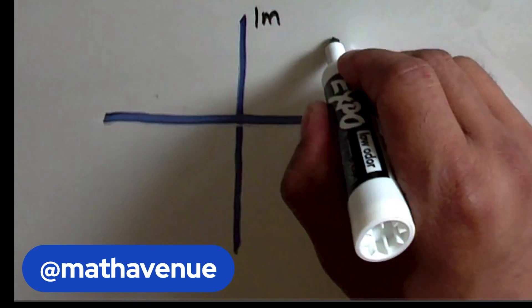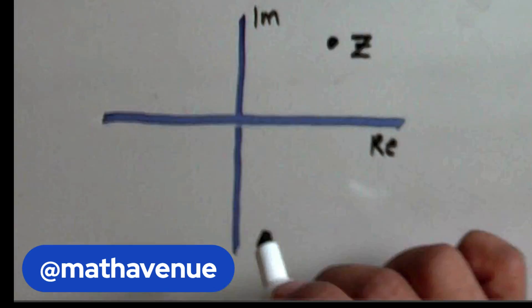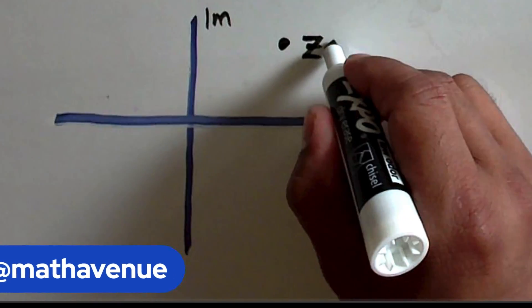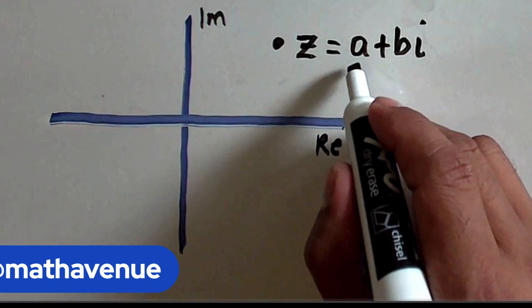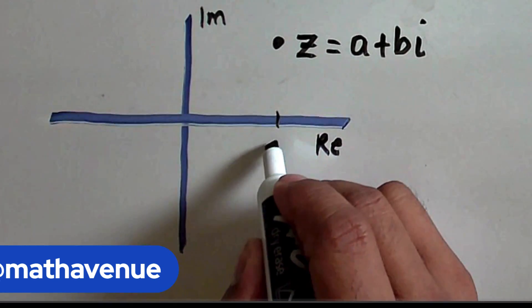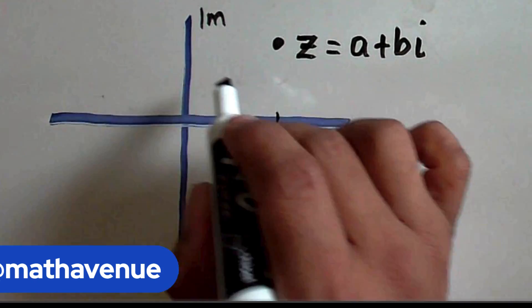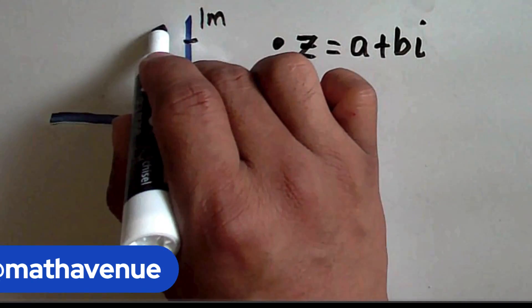Let's say we have a point z. In the complex rectangular plane, this is expressed as a plus bi, where a is the real part, this is a, and this b is in the imaginary axis here.